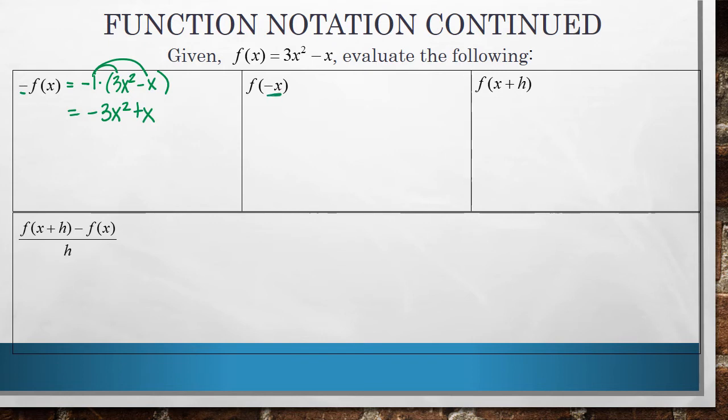Now this is asking us to input negative x everywhere I see an x in our function. So I'm going to go up to our function. Anywhere I see an x, I'm going to replace it with this negative x. So I get 3 times negative x quantity squared minus a negative x. Negative x squared is negative x times negative x, which gives us positive x squared. Minus a negative is a positive. Or the other way you can look at it is the opposite of a negative value is a positive value.